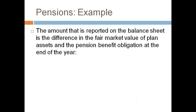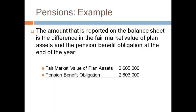The amount reported on the balance sheet is the difference between the fair market value of plan assets and the amount owed to employees. For this example, the amount of the assets is greater and the plan is overfunded. A prepaid pension asset is recorded on the balance sheet for $2,000.